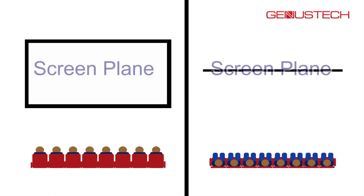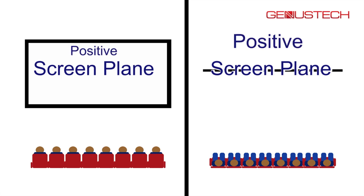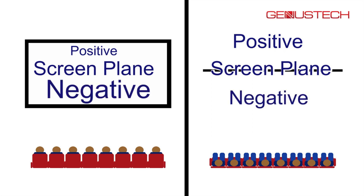How do we differentiate on a flat screen between something that is in the foreground and something that's in the background? A bit of terminology here. The surface of the screen is called the screen plane. Anything in the background is in positive space and anything in the foreground is in negative space, and we'll see why that is in a minute.